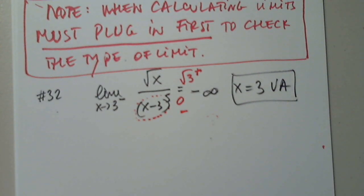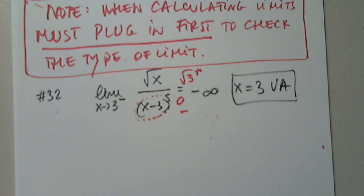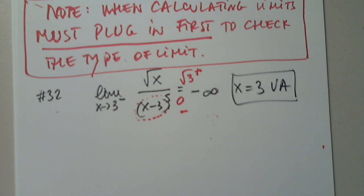Does everyone understand this process? Any questions? Does it matter if the numerator or denominator is negative, or as long as one is negative it's going to be negative? Of course — negative over positive or positive over negative will always give us negative. But if I have negative over negative, it will be positive.